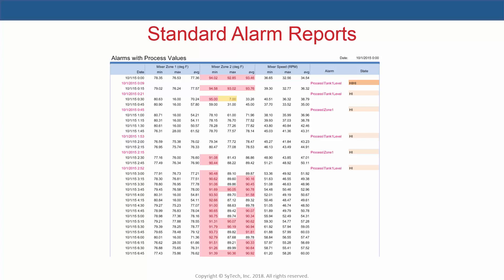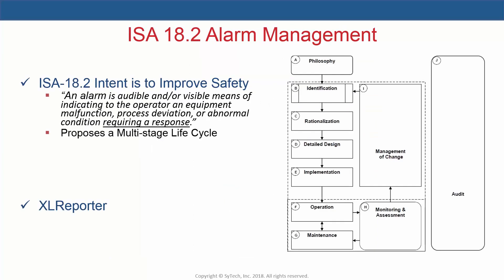All of these reports provide useful information about the alarm system, but we'll now turn our attention towards reporting for ISA compliance. The ISA 18.2 standard is considered a recommended and generally accepted good engineering practice by regulatory and insurance agencies, and aims to increase safety and optimize operator response to alarms. It proposes a multi-stage life cycle based around continually monitoring and improving alarm system performance. SciTech provides a benchmark report useful for control engineers and system integrators looking to evaluate alarm system performance against ISA standards.